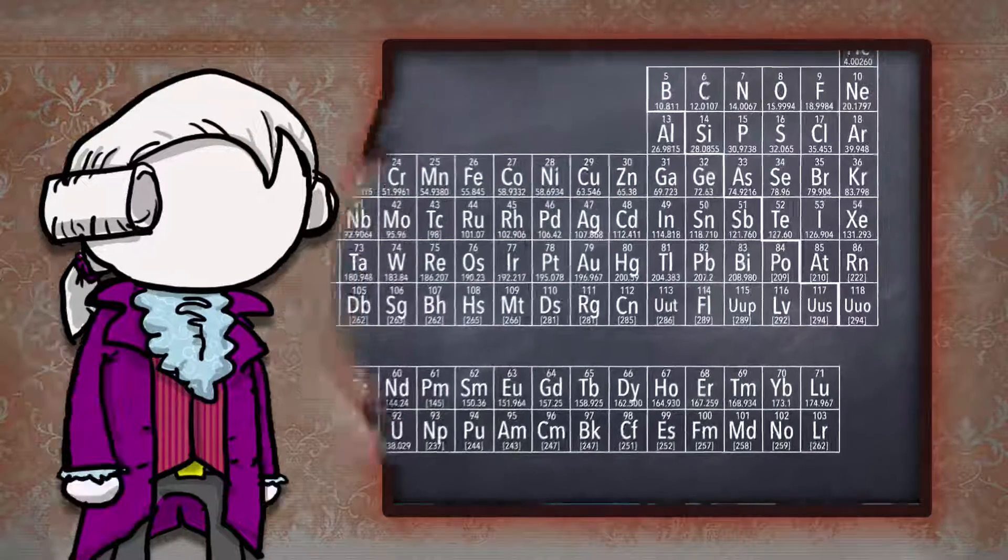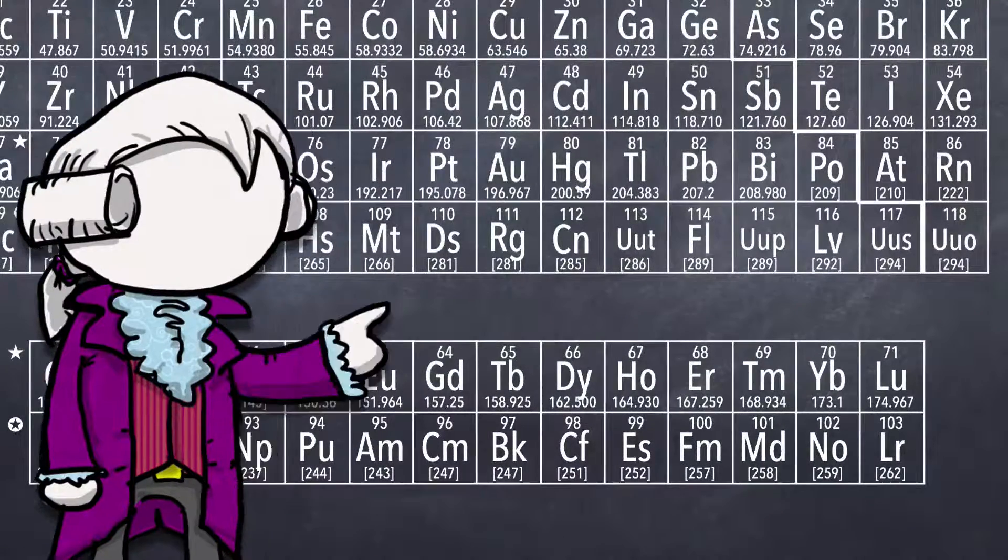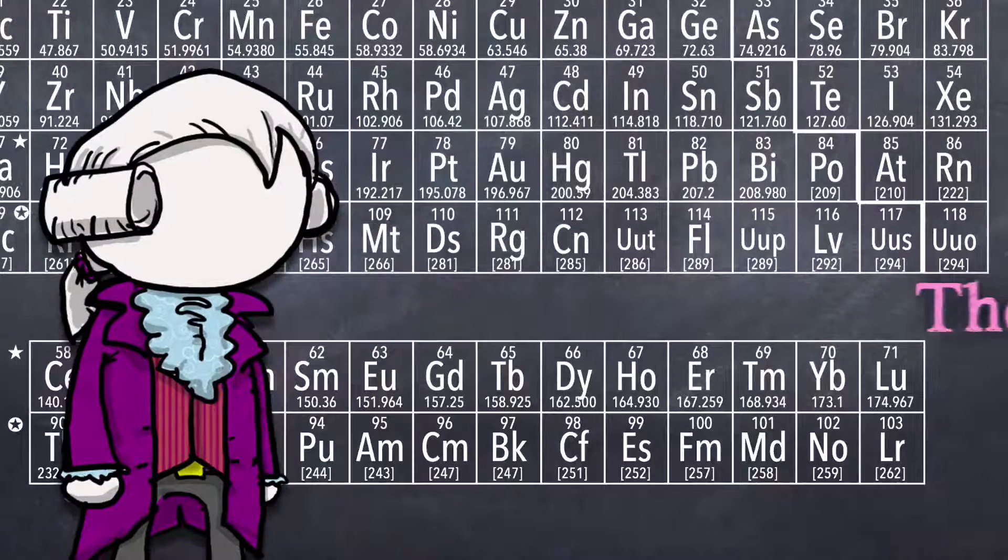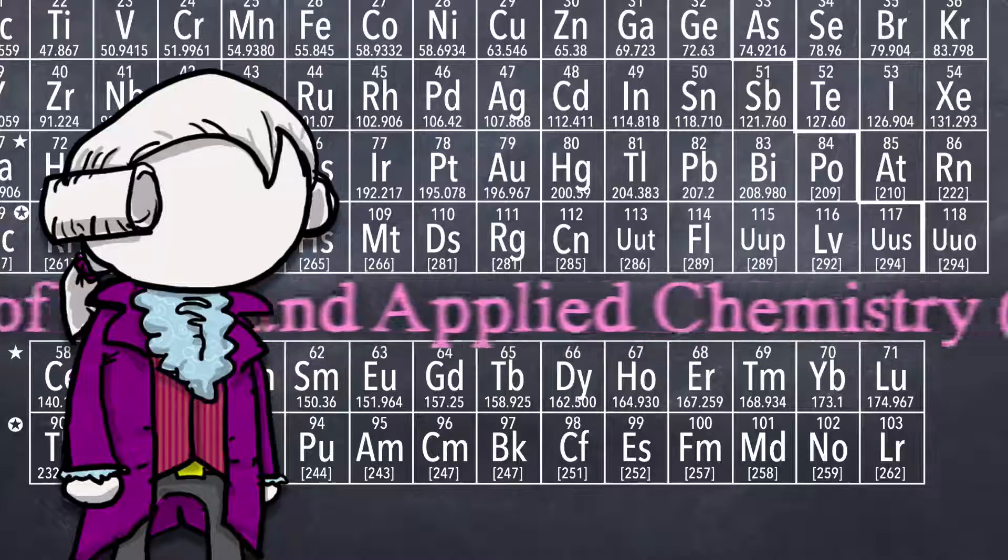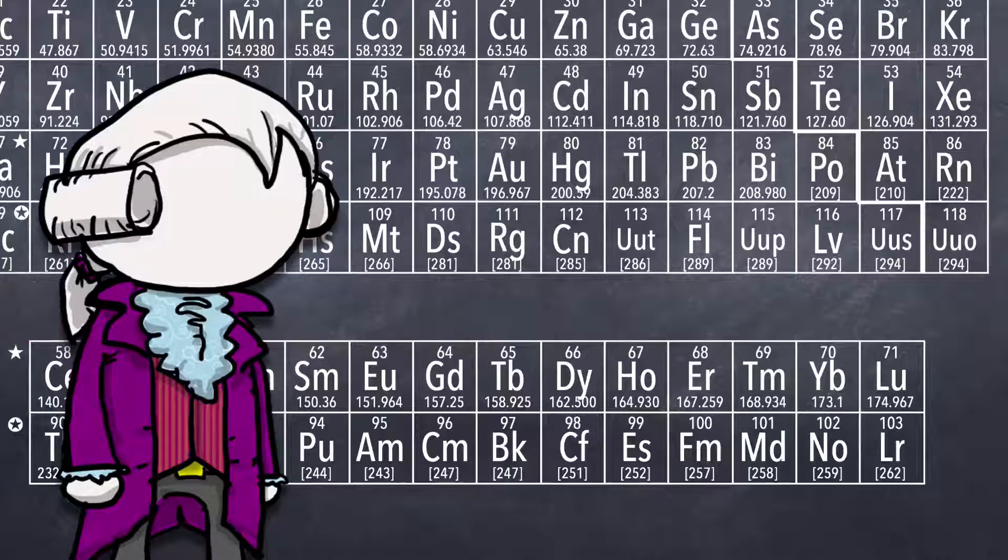So when an element gets discovered, it's given a temporary designation based off its atomic number. You can easily spot them because the symbols have three letters. An element only gets an official name and symbol after the International Union of Pure and Applied Chemistry, or the IUPAC, validates the discovery. And that's not always as easy as it sounds.